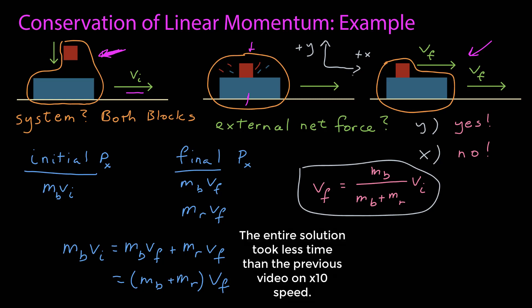Seriously, that's it. I brought back the figure from before. It is exactly the same answer. The final velocity is equal to the mass of the blue block, divided by the total mass times the initial velocity.